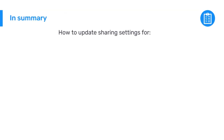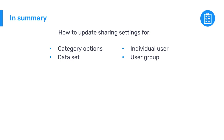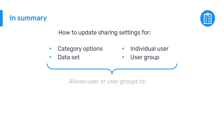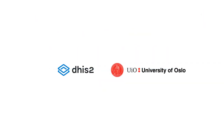In this video, we have learned how to update the sharing settings for both category options and a dataset for an individual user and a user group. This allows specific users and user groups to view, edit, and capture metadata and data for category options and datasets.